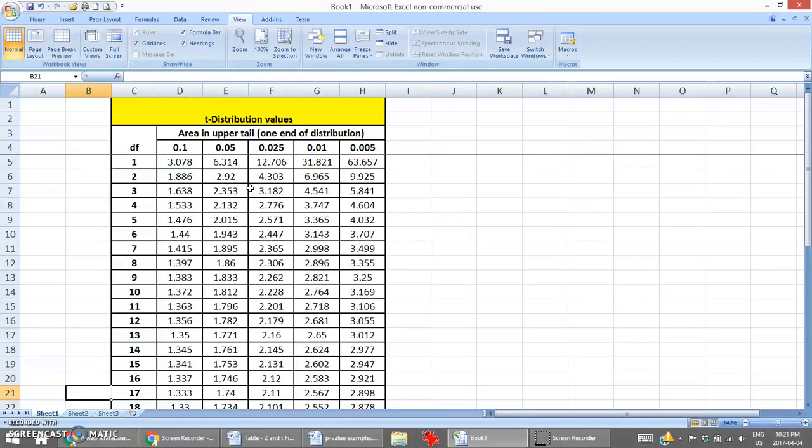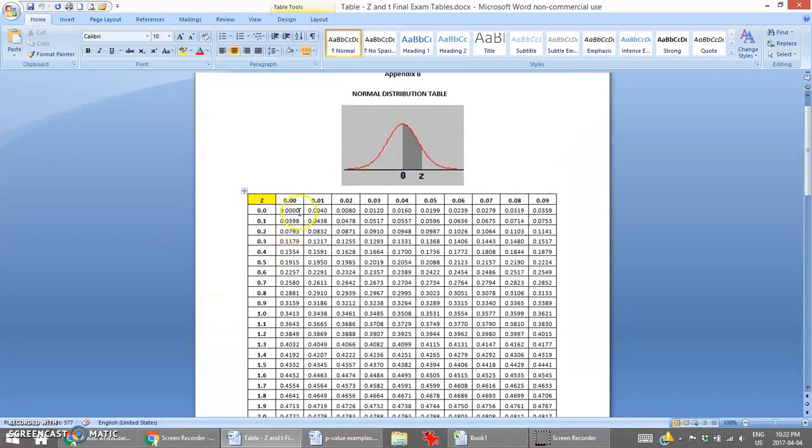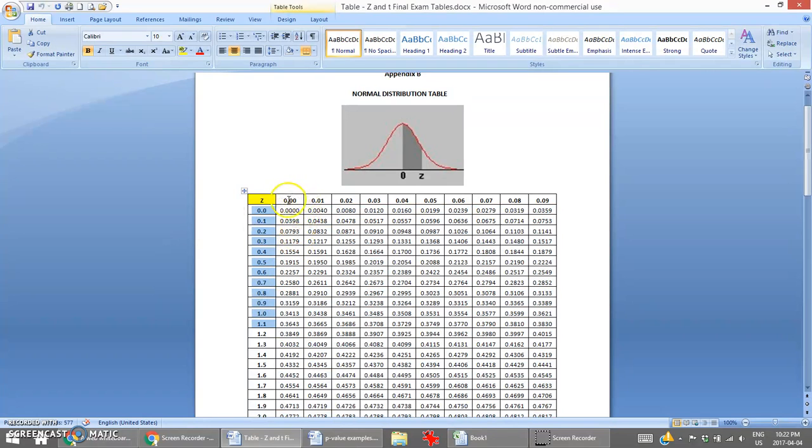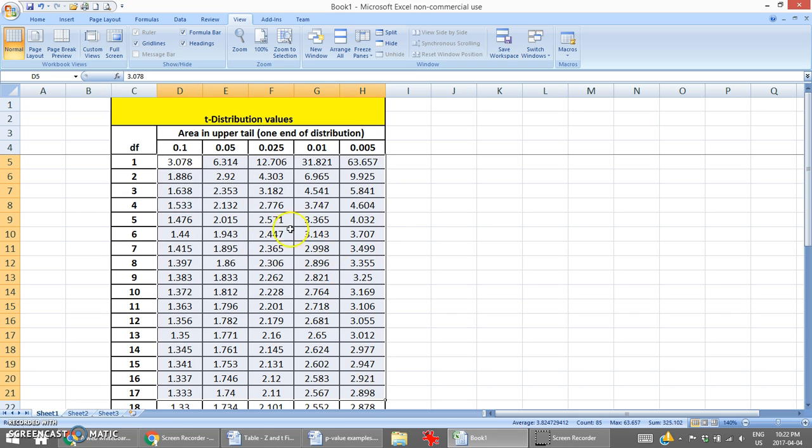What we need to do is find the area or the probability associated with a t value of 2.5. However, you'll soon realize that a t distribution chart versus the normal distribution chart is laid out quite differently. In the normal distribution chart, all these interior values are probabilities. The outside are the z values, the test statistics. Whereas in the t distribution chart, the interior values are the test statistics. Up here these five values are the actual area or probabilities. So the t distribution chart is set up a little differently.